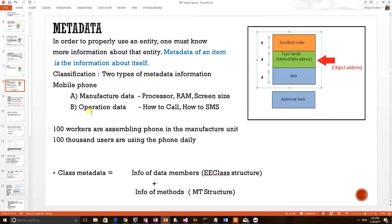So from here we know that operation metadata has heavier usage than manufacture metadata. This is true in the case of object. Because object creation happens once, but the object usage is happening many times.